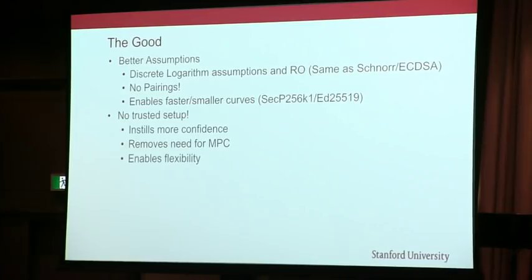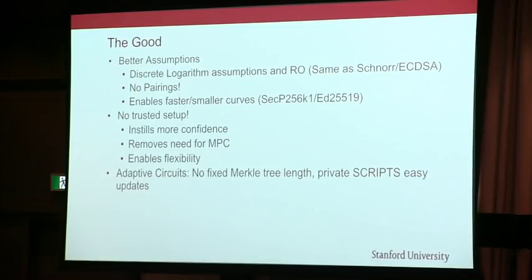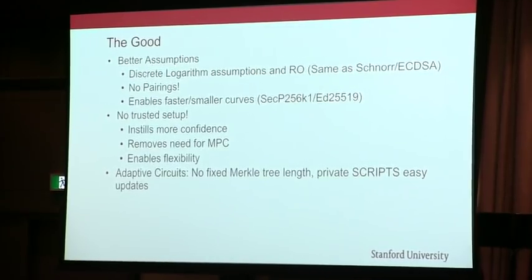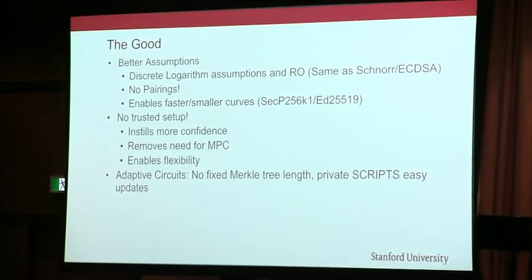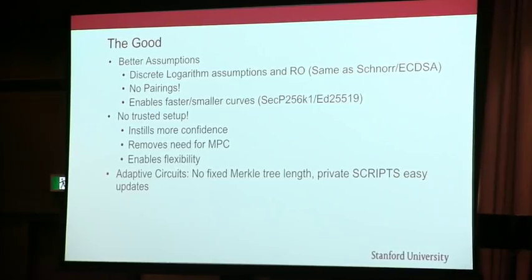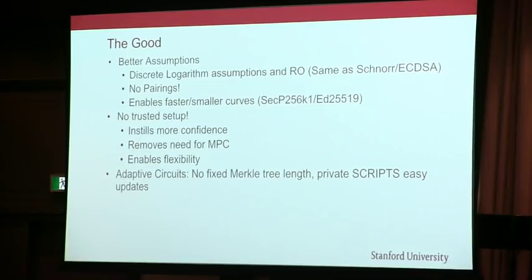The main reason to use Bulletproofs is no trusted setup. One reason is that it instills more confidence — there can be no more fear-mongering, and no one can say Zcash cheated in their trusted setup, and it removes the need for an MPC. But the real reason is that it enables flexibility: you can update and change the circuit much more easily without redoing an MPC. For example, you could have adaptive circuits. In Zcash, you need to prove something is in a Merkle tree and they had to fix the size of the Merkle tree. With Bulletproofs, you can just say how large is our Merkle tree actually, and implement the circuit for that.